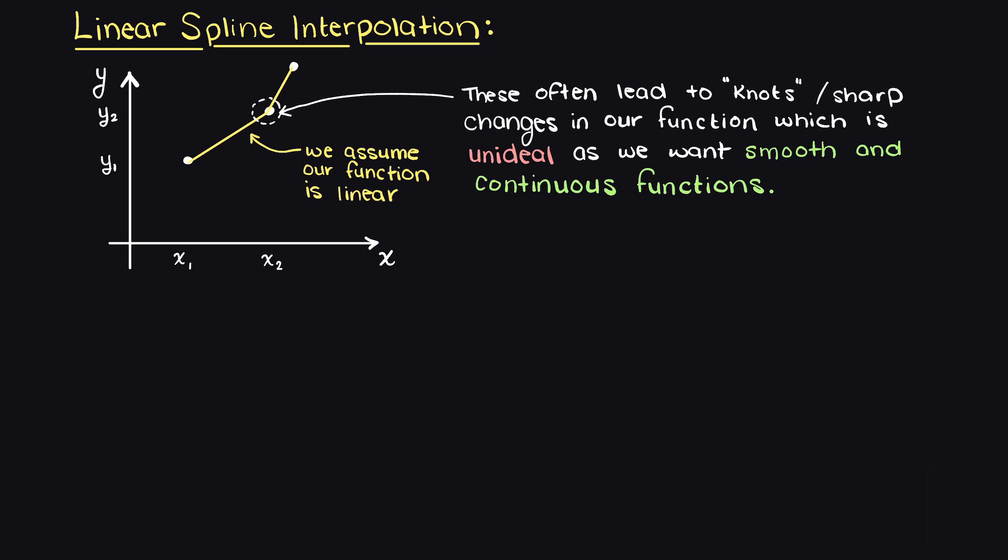So, now that we have an idea of what linear spline interpolation looks like, how do we go about actually finding an interpolating function such that we can find an output along this line here?